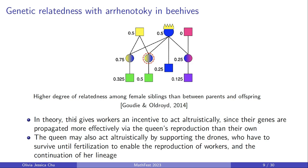Due to the haplodiploid nature of bee reproduction, there is a higher degree of genetic relatedness among female siblings — approximately 75% — than between parents and offspring, which is approximately 50%. In theory this gives workers an incentive to act altruistically because their genes are more effectively propagated through the queen's reproduction than through their own. Similarly, the queen benefits from supporting drones going out to reproduce, as this continues her lineage.